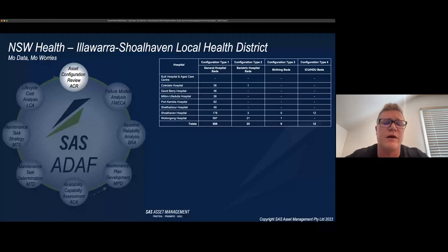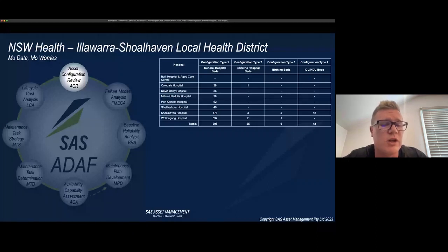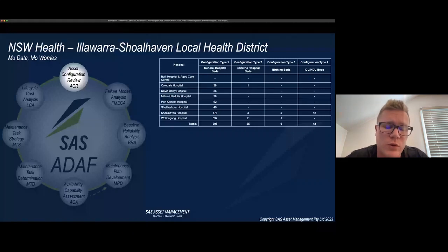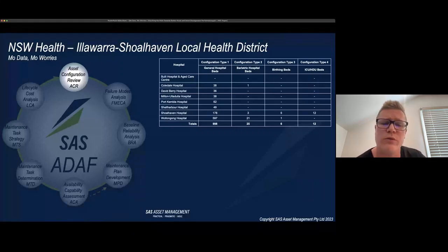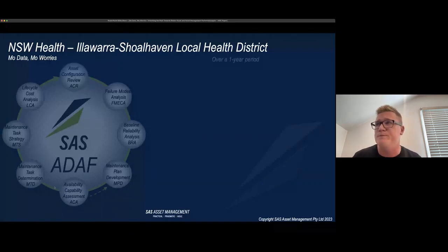We generated a thorough understanding of what each type of hospital bed looks like and what each subsystem's functionality needed to be. Probably the most valuable step at this juncture was working with each hospital team to identify the population of each configuration type per hospital. I couldn't believe it, but this hadn't been done before — the asset management team didn't fully understand what hospital beds were throughout their hospitals. That was a really powerful and useful finding.